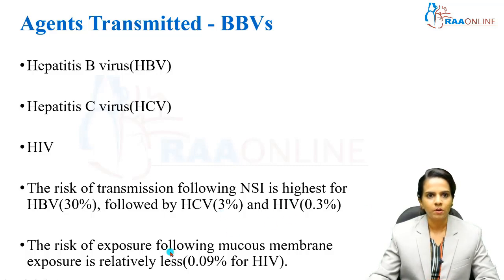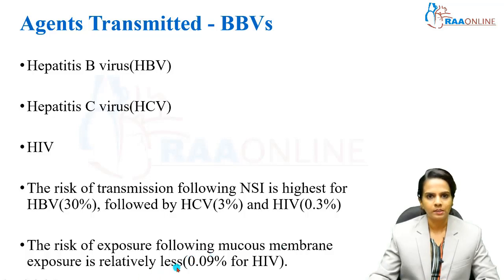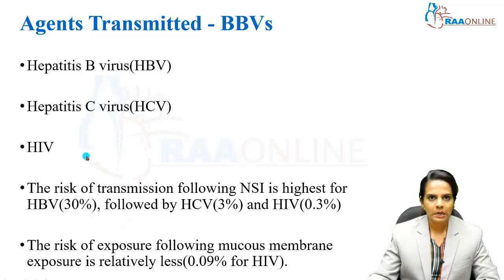The risk of exposure following mucous membrane exposure is relatively less — only 0.09% for HIV. These are the three main blood-borne viruses that can be transmitted through contaminated needles and sharps.